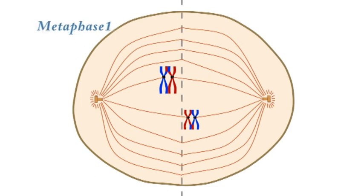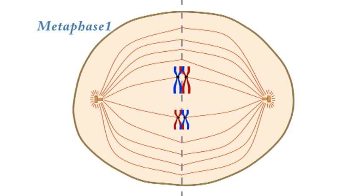In metaphase 1, a tug-of-war between spindle fibers aligns homologous pairs of chromosomes along the metaphase plate.